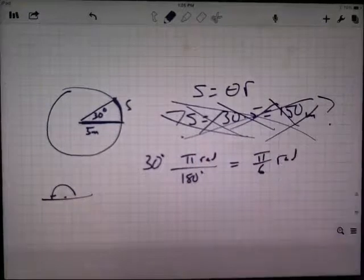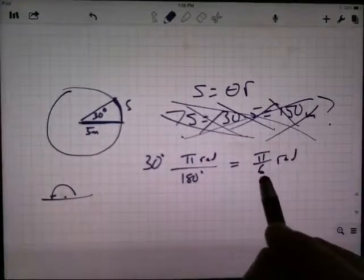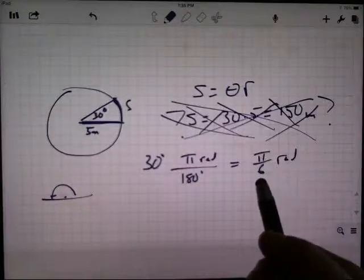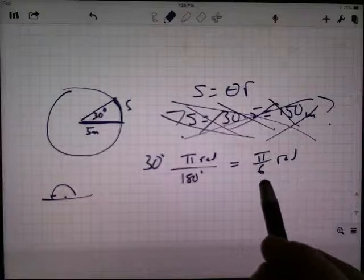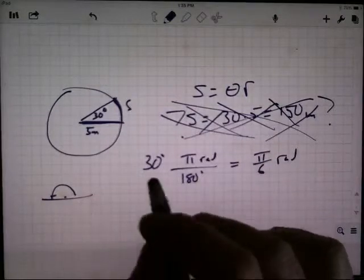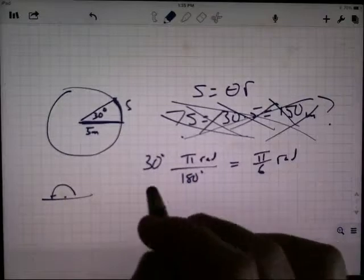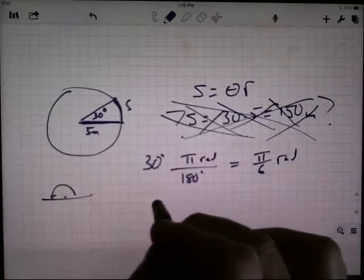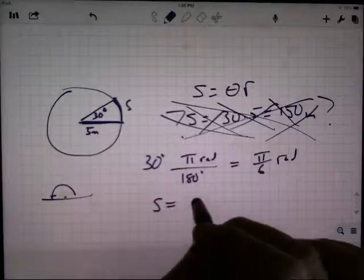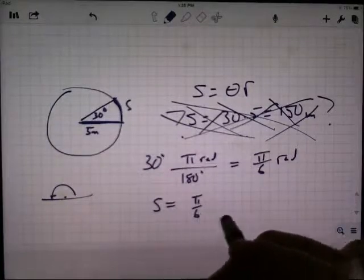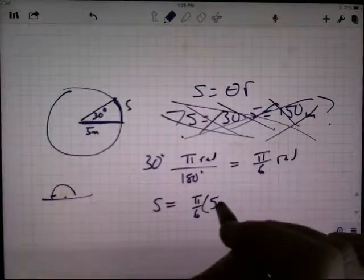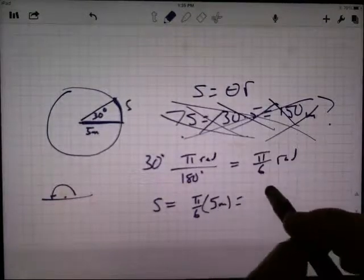So if the angle is pi divided by 6, which is a little more than a half, right? Because pi is a little more than 3. So if you divide by 6, it's almost like a 3 over 6, which would be a half. So this is a little more than half a radian. So if I do now this arc length formula, the arc length is the angle pi over 6 radians times the radius of 5 meters gives me an arc length of 5 pi over 6 meters.